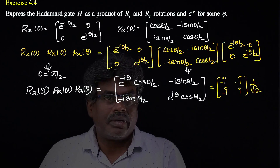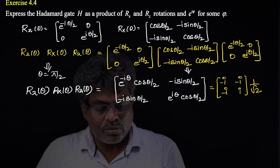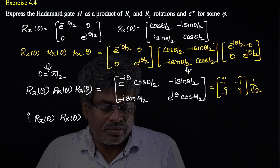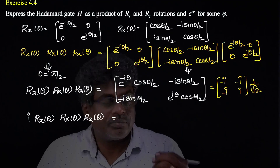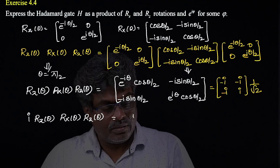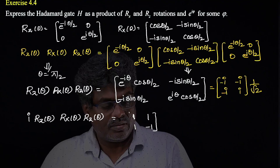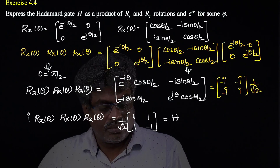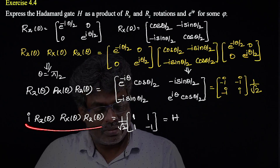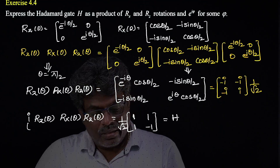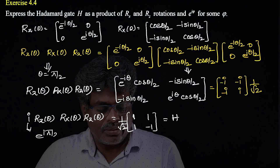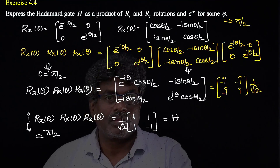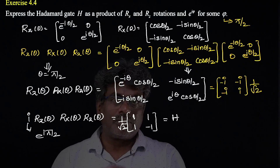The result is not yet equal to the Hadamard gate. Multiplying both sides by i, we get i · Rz(π/2) · Rx(π/2) · Rz(π/2) = (1/√2) times the matrix [[1,1],[1,-1]], which is the Hadamard gate. So H = e^(iπ/2) · Rz · Rx · Rz, where the phase φ = π/2.